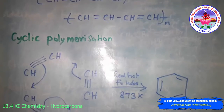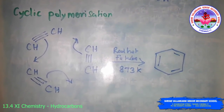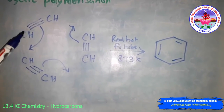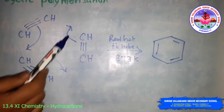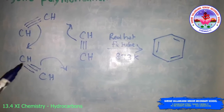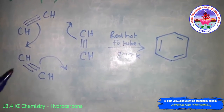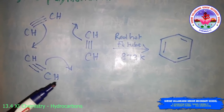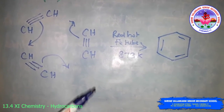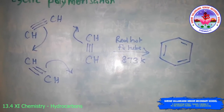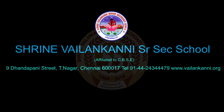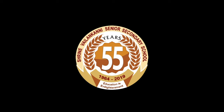Cyclic polymerization: ethyne on passing through a red hot iron tube at 873 K undergoes cyclic polymerization. Three molecules of ethyne polymerize to form benzene. This benzene is the starting molecule for the preparation of derivatives of benzene, dyes, drugs, and a large number of other organic compounds. This is the best route for entering from aliphatic to aromatic compounds. Next class, we will discuss aromatic hydrocarbons.